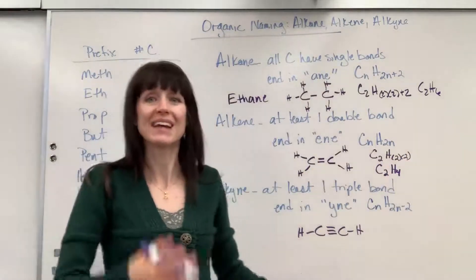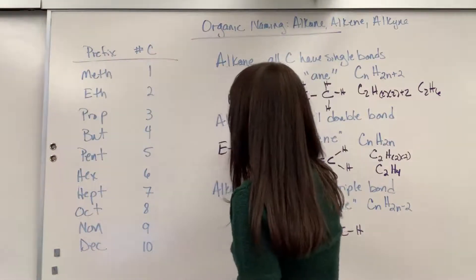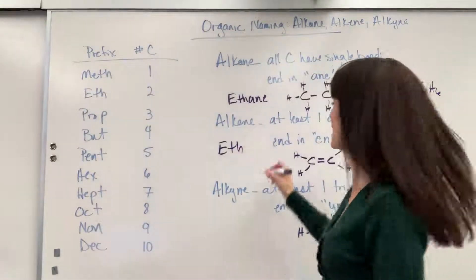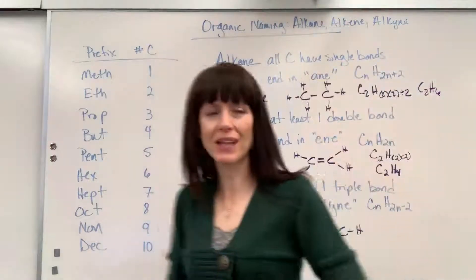Now what's this called? Again, count the carbons. I've got 1, 2. So two carbons is eth, and because we have a double bond, you put the ending E-N-E, and that is called ethene.